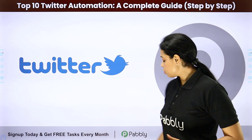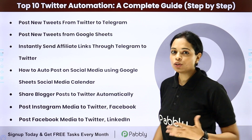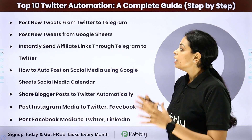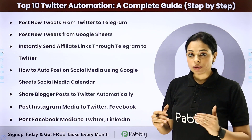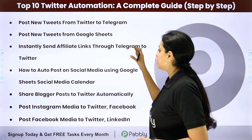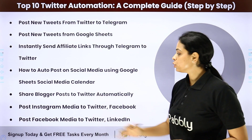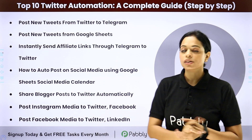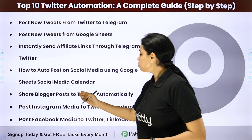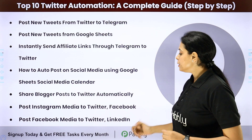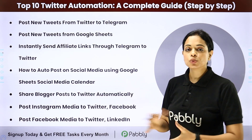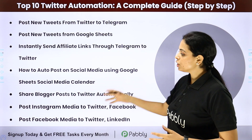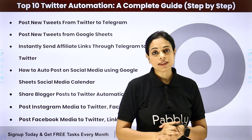Here I am going to take examples of the most trending topics on our website: how you can post new tweets from Twitter to Telegram, post new tweets from Google Sheets, instantly send affiliate links through Telegram to Twitter, how to auto post on social media when you have a social media calendar integrated with Google Sheets, share blogger posts to Twitter automatically, and post Instagram and Facebook media to different social media platforms.